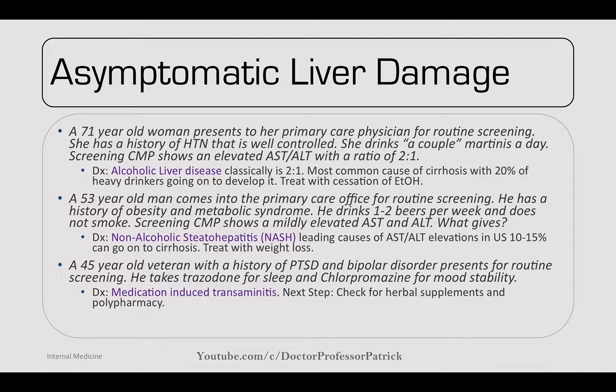Asymptomatic liver damage — a 71-year-old woman with hypertension drinks a couple of martinis a day. Screening CMP shows elevated AST to ALT ratio of 2:1. Alcoholic liver disease is classically 2:1 with AST elevated higher (mnemonic: 'toast, raise your glass'). It's the most common cause of cirrhosis, with 20% of heavy drinkers developing it. Treat with cessation of alcohol.